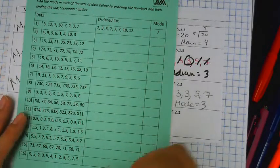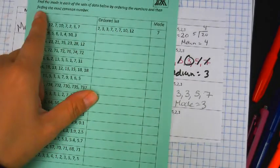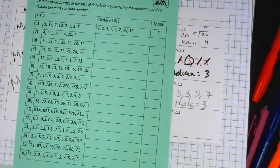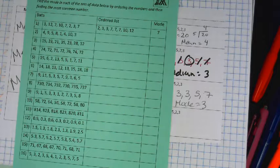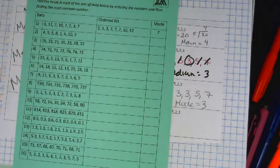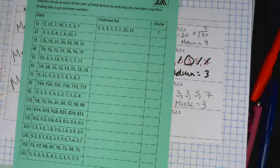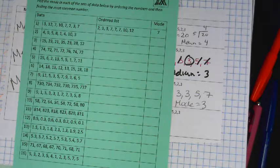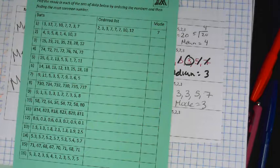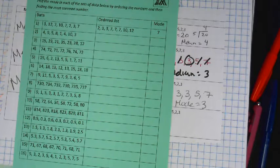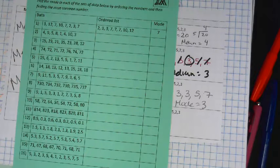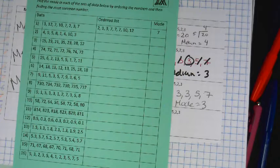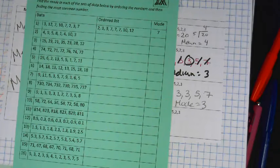All right, so find the mode of each set of data below by ordering the numbers and then finding the most common number. Do they have more than one answer? It's only one. They all have just one number, not two. All right, let me show you.